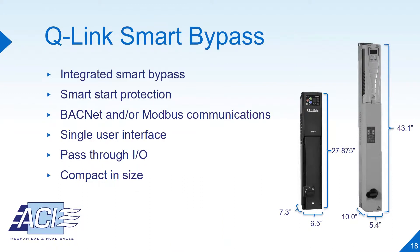The Q-Link smart bypass is the Q-Link VFD with integrated smart bypass. This model has advanced smart start protection and native BACnet and/or Modbus communications. It also has a single user interface for the VFD and bypass, as well as pass-through IO, which eliminates redundancy during setup and creates constant communication between the VFD and the bypass. The Q-Link smart bypass is also very compact and lightweight. In fact, it is the smallest VFD and bypass on the market. For comparison, this is a Q-Link 20 horsepower with bypass next to an ABB 20 horsepower VFD with bypass. An ABB is one of the leading VFD manufacturers. As you can see, the Q-Link smart bypass is much smaller in height and depth, which saves space in the mechanical room.